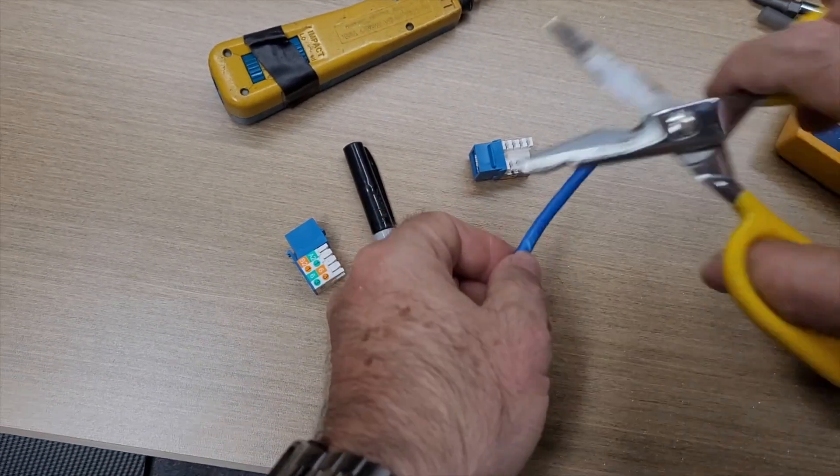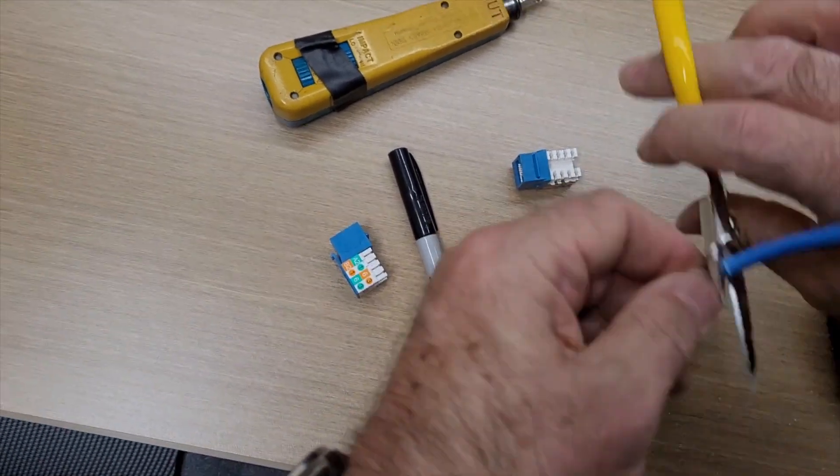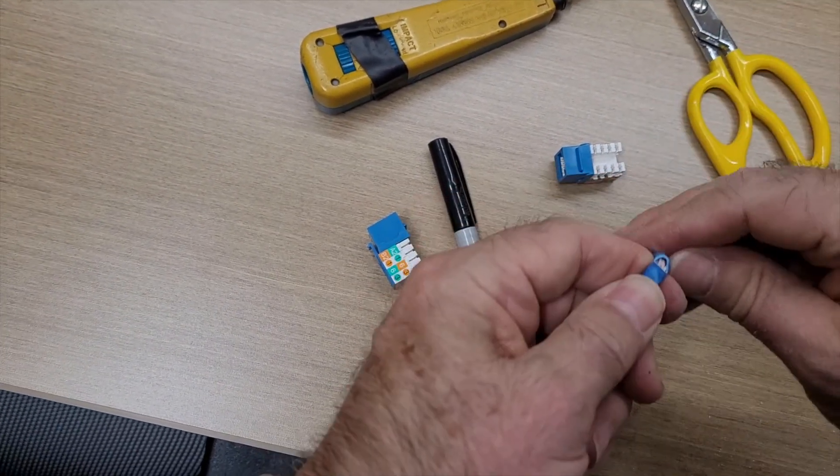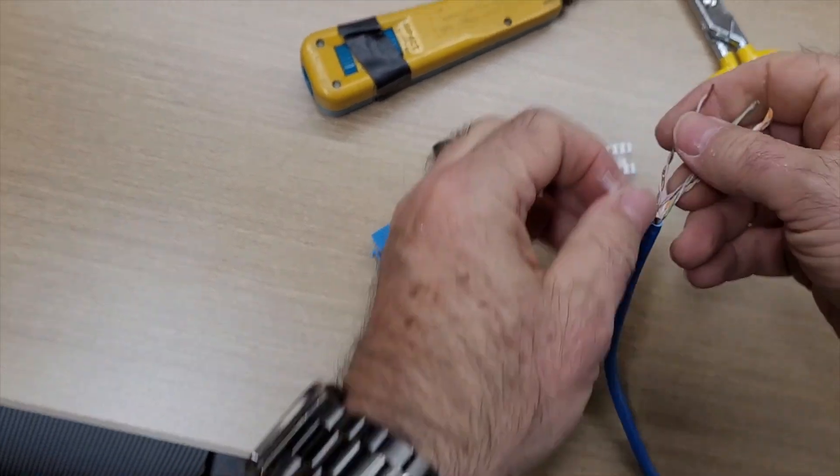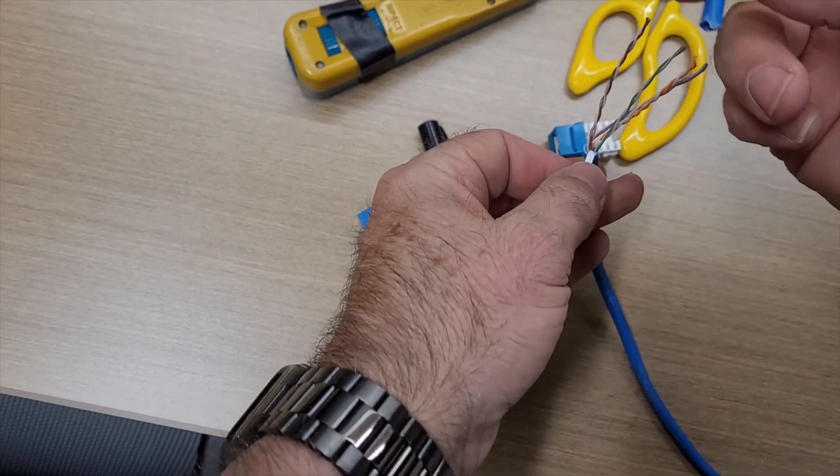So take your cable, and these are called snips, they're electrician scissors. You probably could get by with some regular scissors, although your life would be a little bit harder if you had to do a lot of these. So you want to strip off that jacket, they call this the jacket.